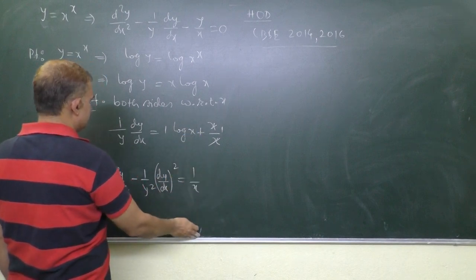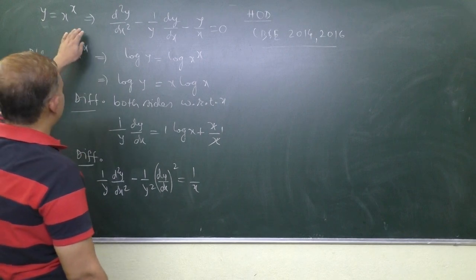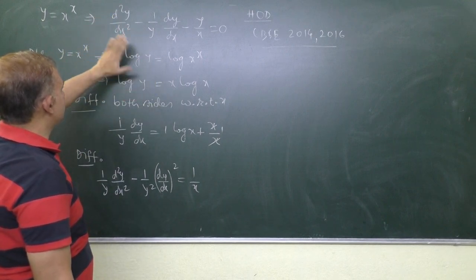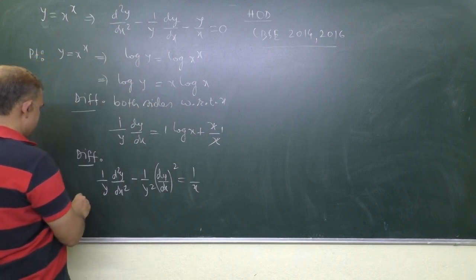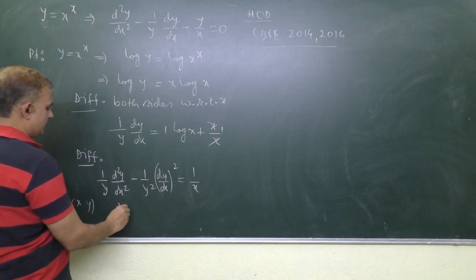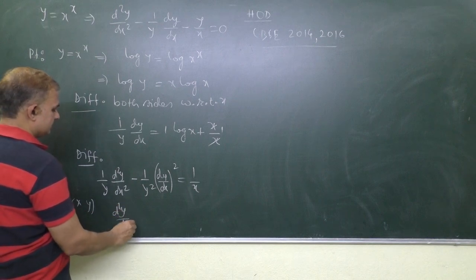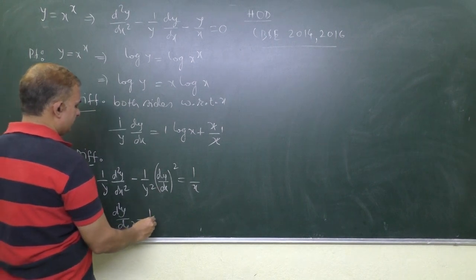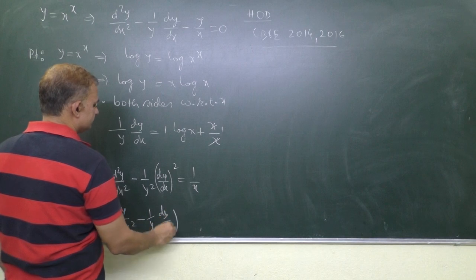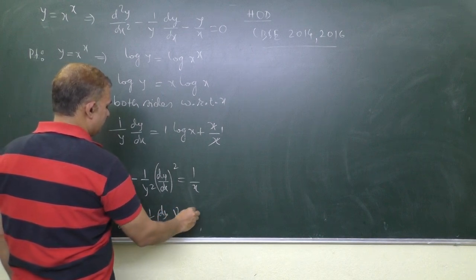Let us see what we are supposed to prove. We are supposed to prove d2y by dx square minus. So multiplying both sides with this y, it becomes d2y by dx square minus 1 upon y dy by dx whole square and is equal to y by x.